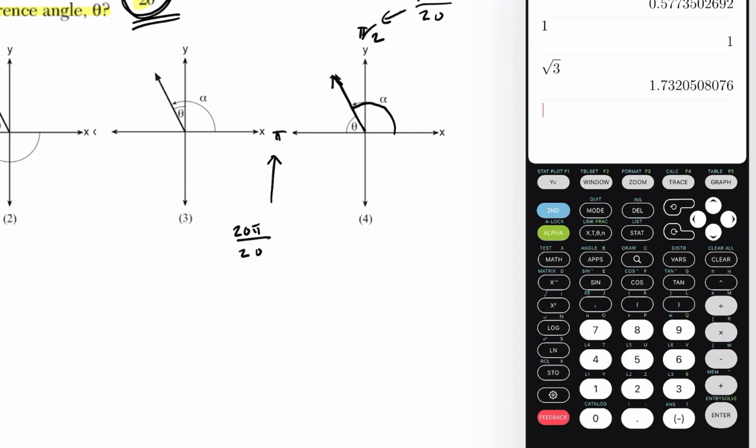Now, the reference angle theta is always some acute angle, so an angle less than 90, between your angle and the x-axis. So it's acute, and it's between the angle and the x-axis, and that's exactly what this is. All right, hope that helped.